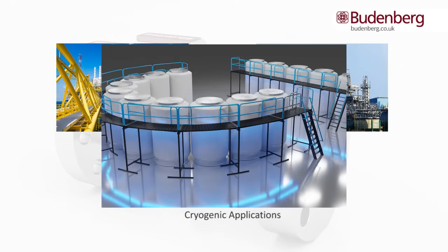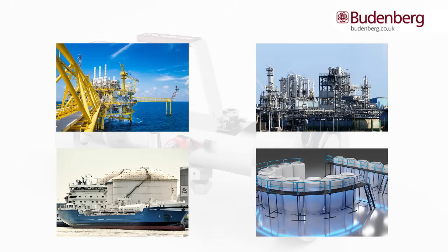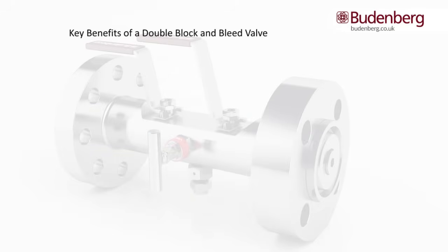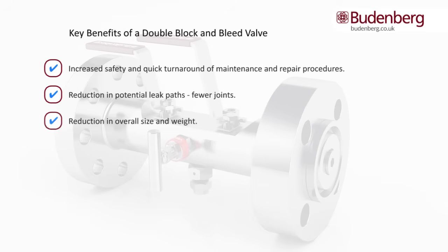They are also used in cryogenic applications, storage, and transmission industries, and could be utilized for both chemical injection into the process or sampling of the process. By strategically incorporating double block and bleed valves into a process system, you are increasing system safety and integrity by having an additional isolation as a fail-safe. This also leads to a quick turnaround of maintenance and repair procedures. A reduction in potential leak paths is also an advantage, as there are fewer joints, and the overall size and weight can also be reduced.